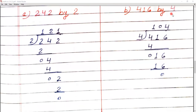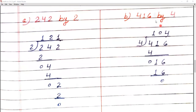Question B: 416 by 4, meaning 416 divided by 4. First digit 4 — 4 ones are 4, minus 4 is 0. Next digit 1 is smaller than 4, so we write 0 above and bring down the next digit 6, making 16. In the 4 times table, 4 fours are 16. The answer is 104.